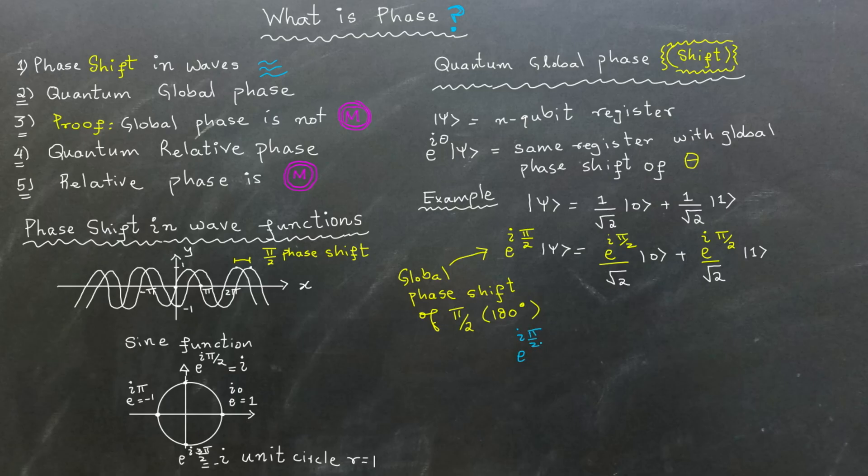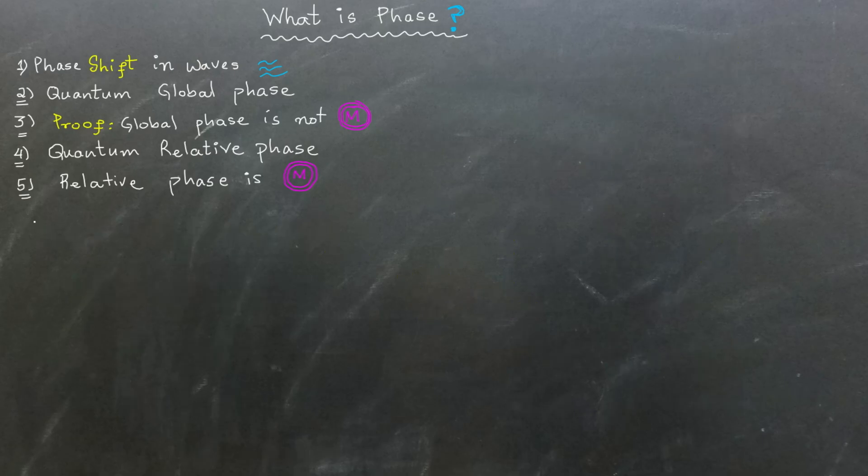Therefore, multiplying the above quantum state by Euler's number raised to the power i times pi over 2 is the same as simply multiplying it by i. Similarly, when we multiply the quantum state by minus 1, then we give it a phase shift of pi radians.